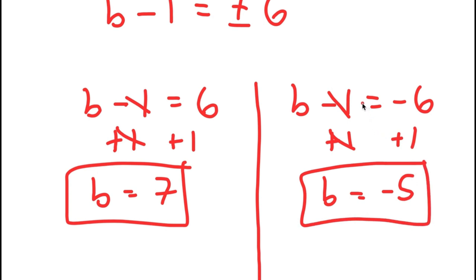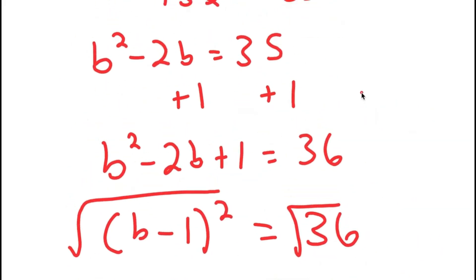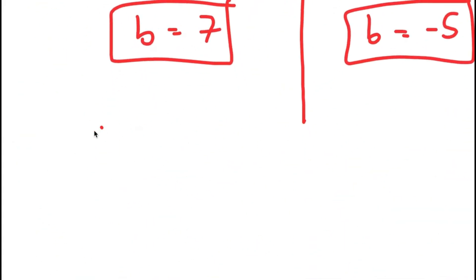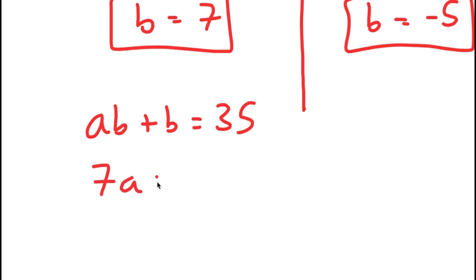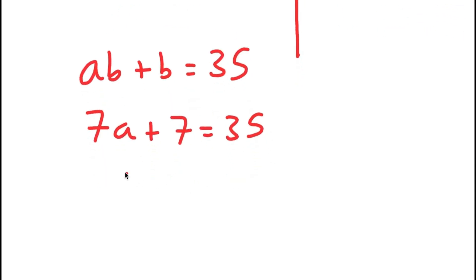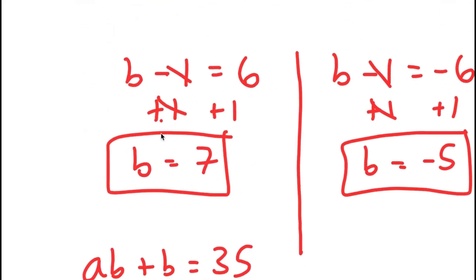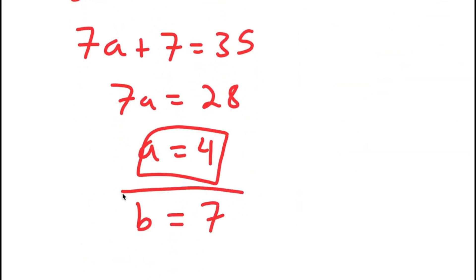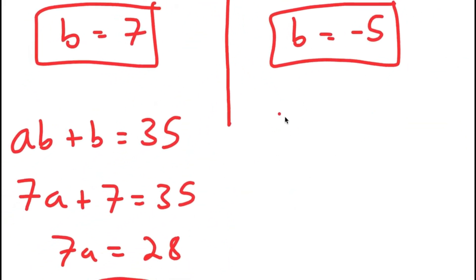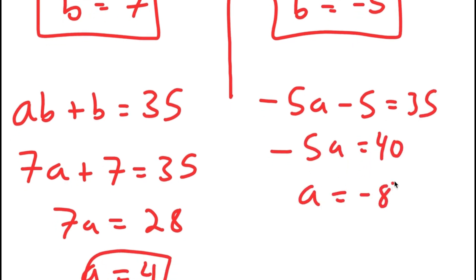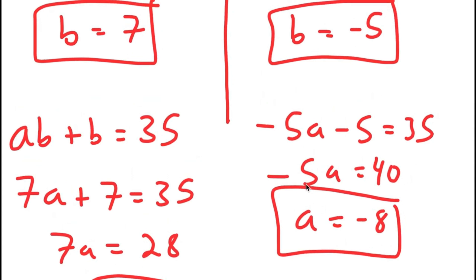Now I plug these values back into AB plus B equals 35. If B equals seven, I get 7A plus seven equals 35, meaning 7A equals 28 and A equals four. So one solution is A equals four, B equals seven. If B equals negative five, I get negative 5A minus five equals 35, meaning negative 5A equals 40 and A equals negative eight. So the two solutions are (A=4, B=7) and (A=−8, B=−5).